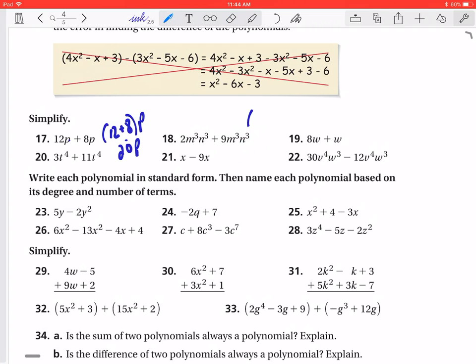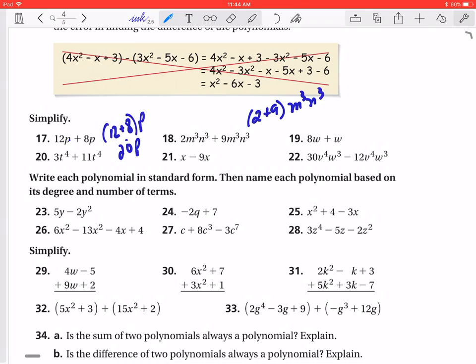So then again, I can just factor out, this will become 2 plus 9, and I can factor out an m³ and an n³. So 9 plus 2 gives me 11m³n³. All right. So that's our final answer on that one.